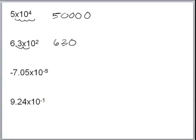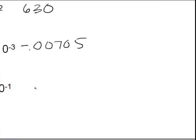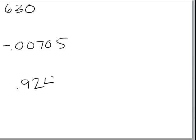For the last two examples we have negative exponents, so we move the decimal to the left. Don't let a negative sign in front of the number throw you off — you do it the exact same way. For negative 7.05 times 10 to the negative 3rd, we move the decimal 3 places to the left, giving us negative .00705. And for 9.24 times 10 to the negative first, we move the decimal one spot to the left, giving us .924.